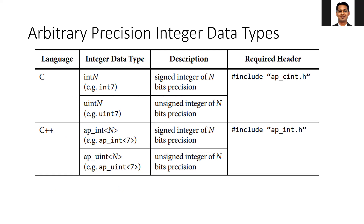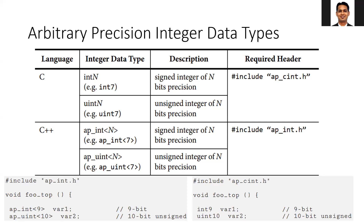For integer data, you need to include the corresponding header file — ap_cint.h or ap_int.h depending on whether you are using C or C++. If you want to define a variable of n bits, you define it with data type int<n>. For example, a 7-bit signed number using int<7> and an unsigned number using uint<7>. These examples shown on screen will help you define any variable of the desired data type.